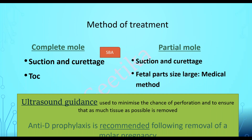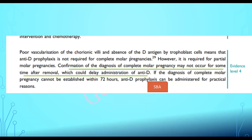The GTG says that poor vascularization of chorionic villi and absence of D-antigen expression by trophoblast cells means anti-D prophylaxis is not required for complete molar pregnancy. However, it is required for partial molar pregnancy. Since confirmation of diagnosis of complete molar pregnancy may not occur for some time after removal — which could delay anti-D administration — in all cases of molar pregnancy, anti-D injection is given within 72 hours.